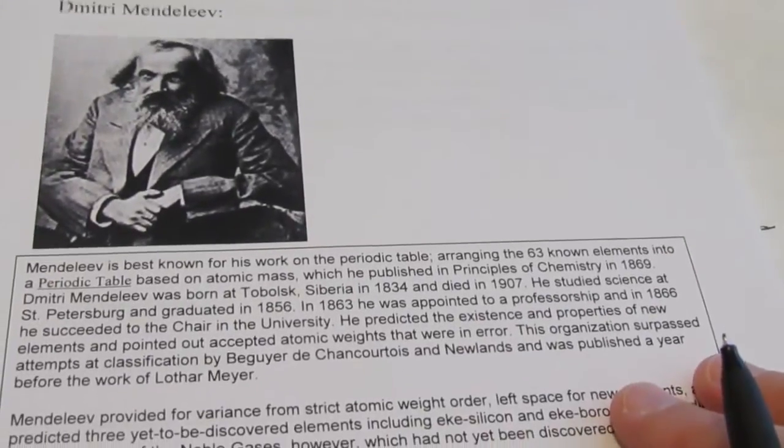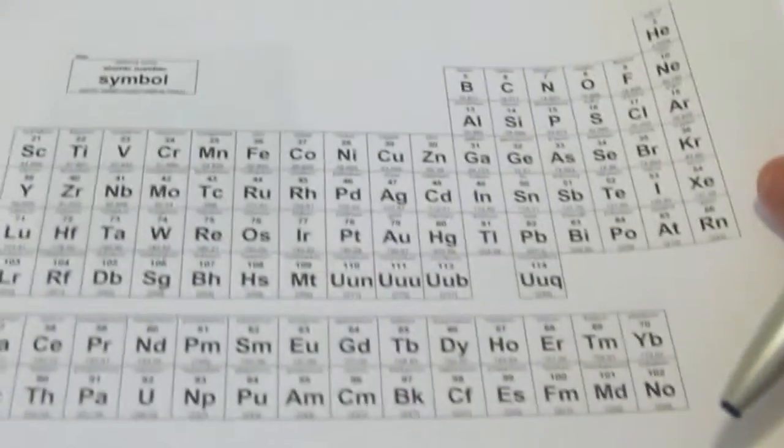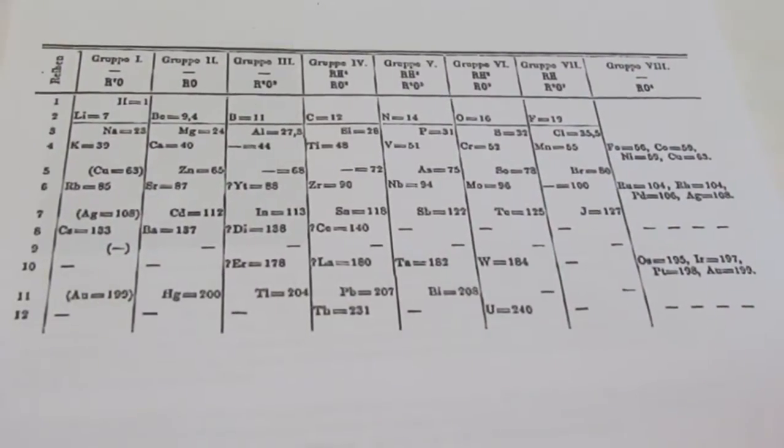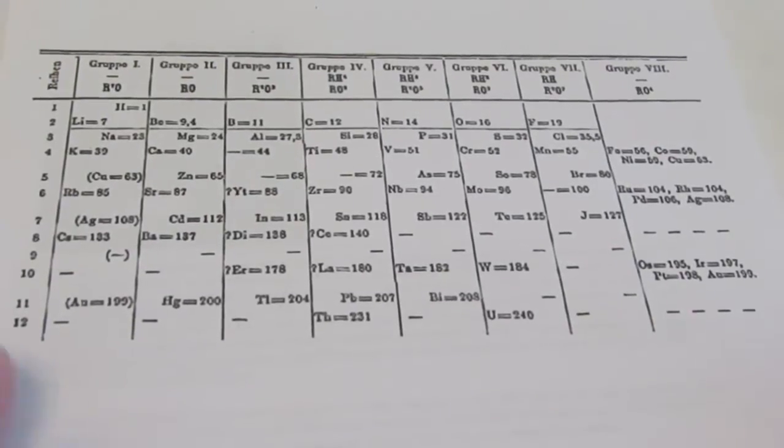The method in which he arranged the elements is actually quite ingenious. Here's today's periodic table. We see this a lot in our discussions. And here is Mendeleev's first periodic table. You don't see a lot of similarities at first, but in reality this is quite remarkable.